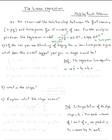So if the car you are thinking of buying has a 200 horsepower, in other words, if x equals 200, what does this model suggest your gas mileage would be? In other words, what is the expected or the predicted value?